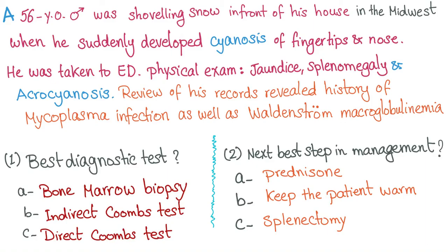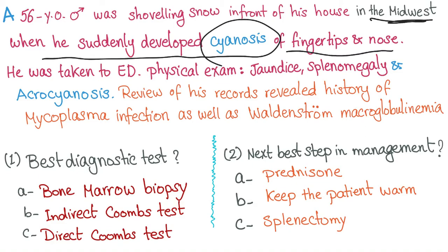We have a 56-year-old male who was shoveling snow in front of his house in the Midwest. The Midwest in the United States is very cold in the winter. He suddenly developed cyanosis of the fingertips and nose and was taken to the emergency department. On physical exam, there is jaundice, splenomegaly, and acrocyanosis. Review of his records revealed a history of mycoplasma infection as well as Waldenström macroglobulinemia.